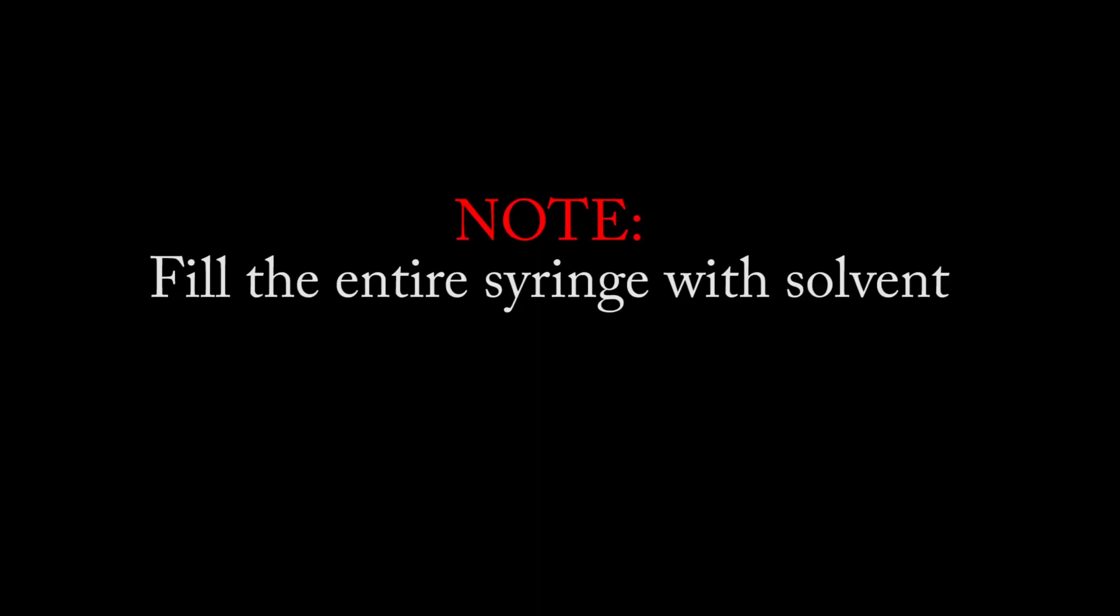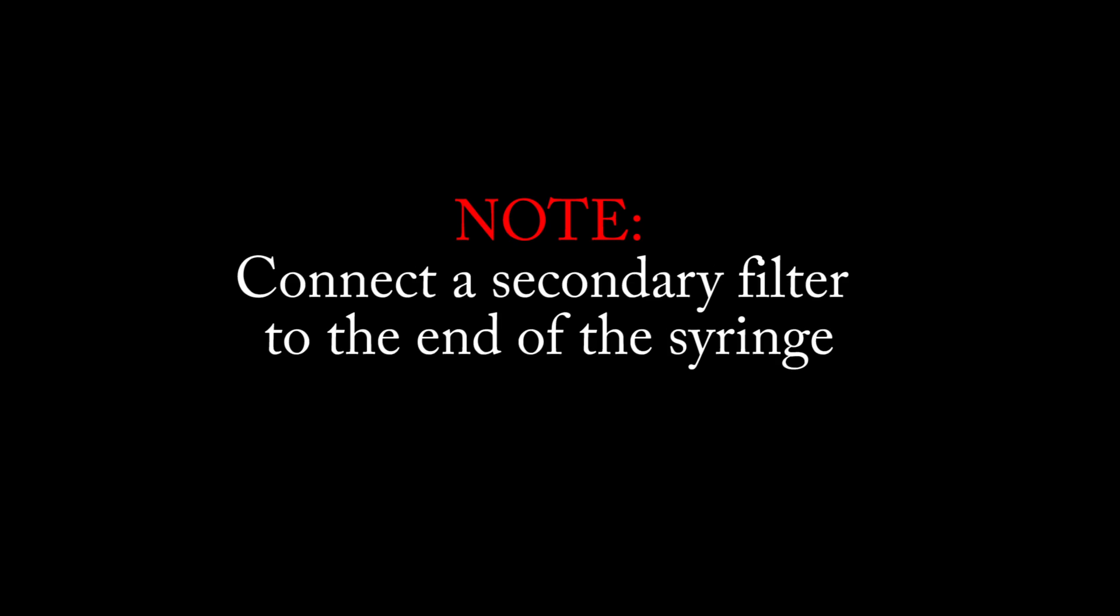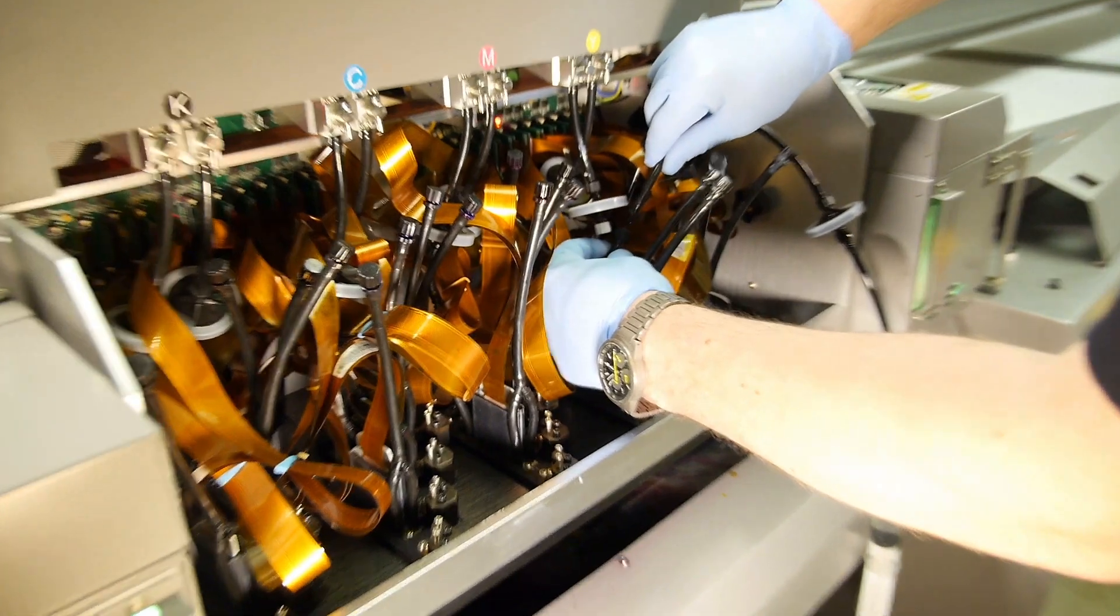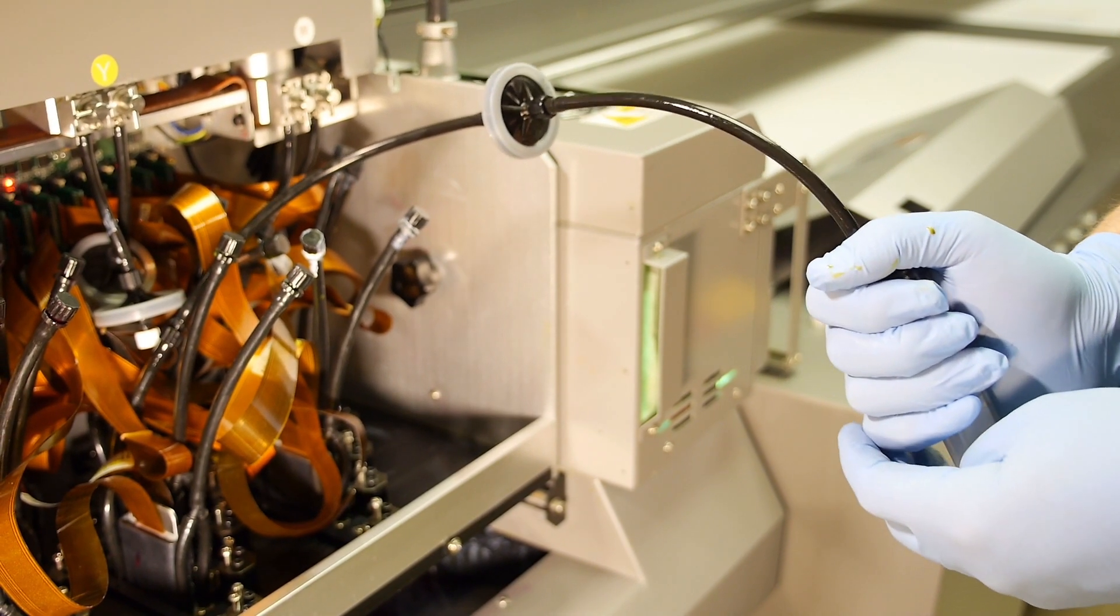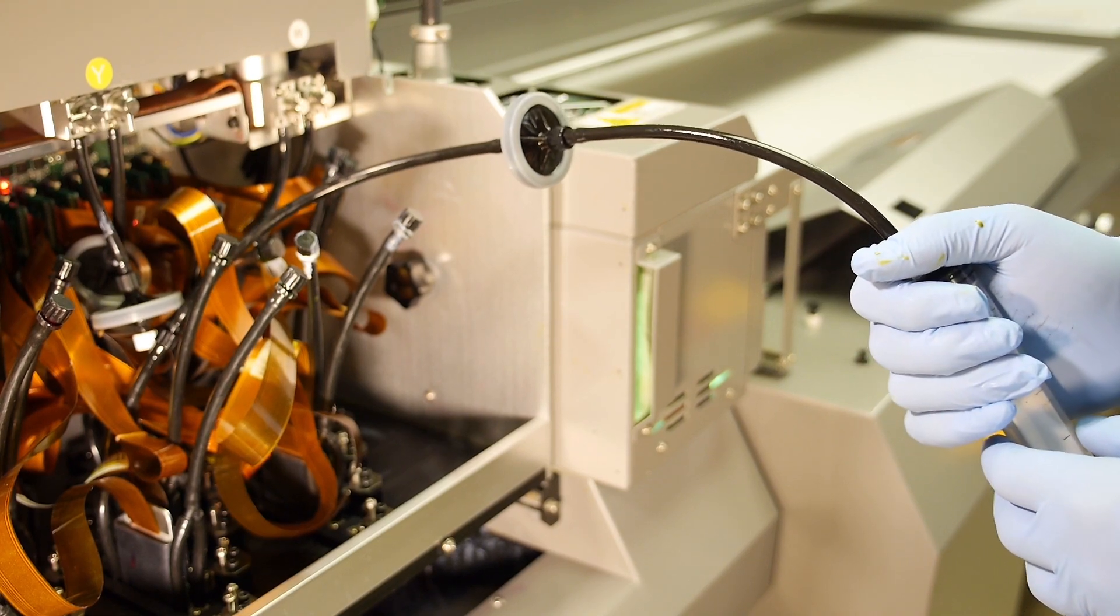Fill the entire syringe with solvent. Connect a secondary filter to the end of the syringe. Then connect the syringe to the ink supply tube. With medium pressure, push the solvent through the syringe in a pulsating motion.